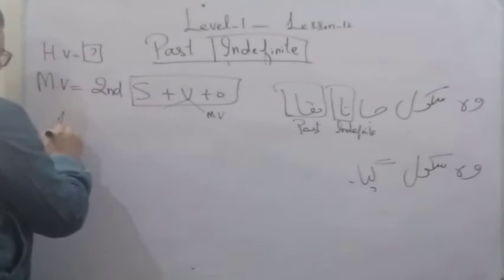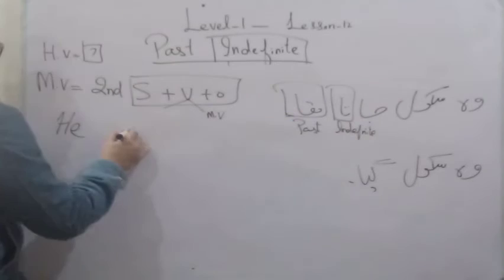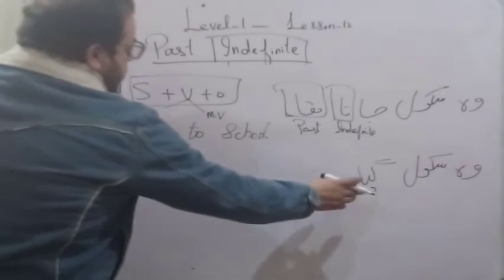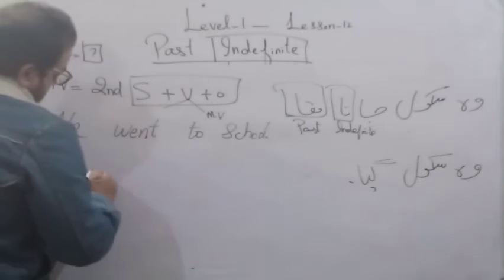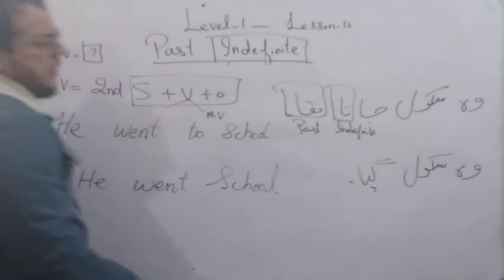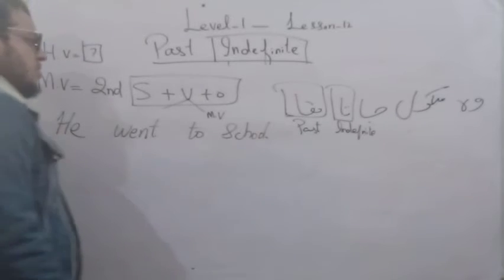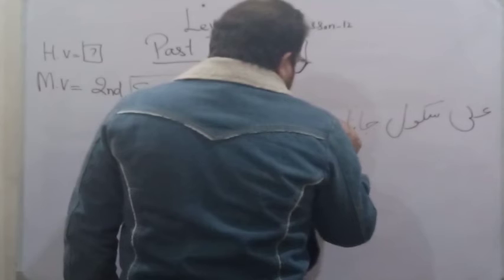So subject is our main word, singular - he. The second form is 'he went to school'. Now when we have 'to school', we will use the same word. He went to school.